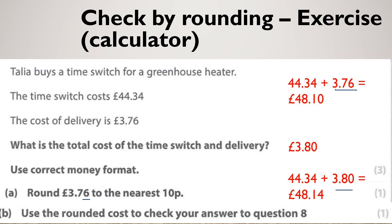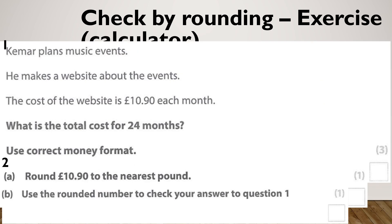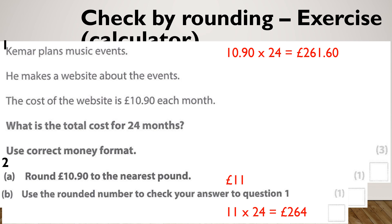Let's do another one — here's a question about Kamar, give this one a go. Hopefully you did £10.90 times 24 and got £261.60. Round £10.90 to the nearest pound — because that's a 9, it's going to round to £11. Then use the rounded number to check your answer, doing the exact same calculation as before but replacing the original number with your rounded number.